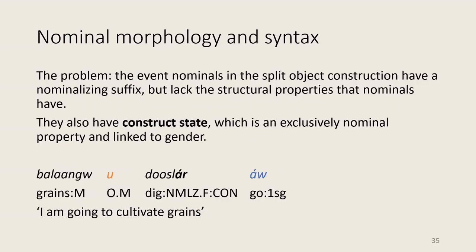But going back to our example, this poses a problem for this kind of analysis. The event nominals in this split-object construction have a nominalizing suffix, but they do not have the actual syntactic properties that nominals have — they occur in a position where nominals regularly don't occur in this configuration with other objects, and they cannot be modified by adjectives. An additional problem is that they have the construct state, which is another piece of nominal morphology — and it's exclusively nominal and linked to gender, which is a nominal property. So it seems we have a word that is morphologically a noun, but syntactically not a verb — which is a problem.